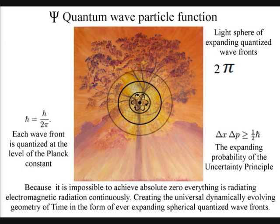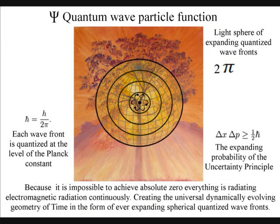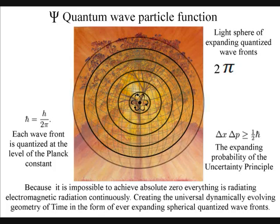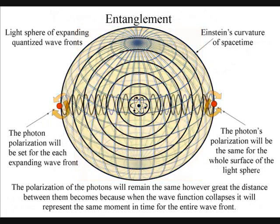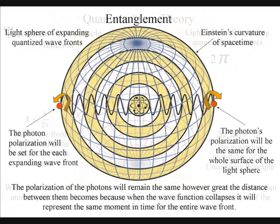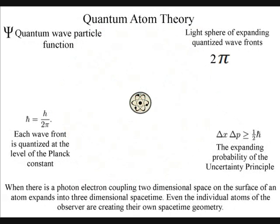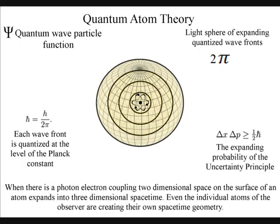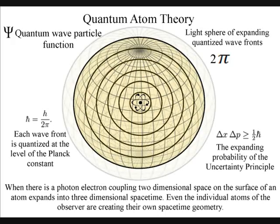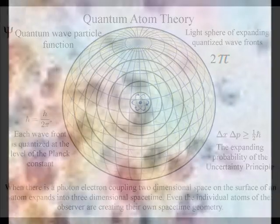Light forms light spheres. The polarization of the light will be the same for the entire surface of the light sphere, creating quantum entanglement and the symmetry and geometry of spacetime. Because it is impossible to achieve absolute zero, all atoms radiate electromagnetic radiation continuously, even the atoms of an observer. The atoms bond together and then create their own spacetime geometry and symmetry in unison.